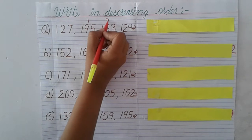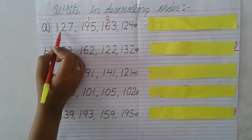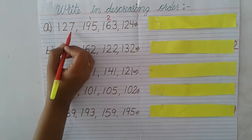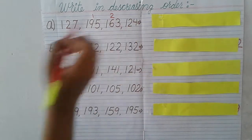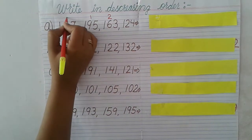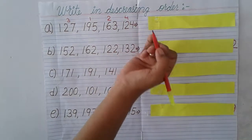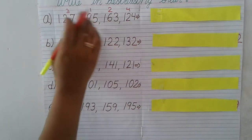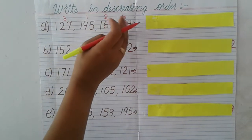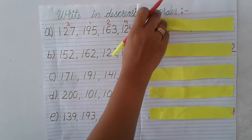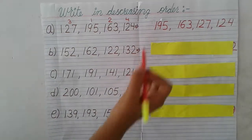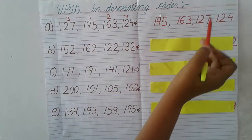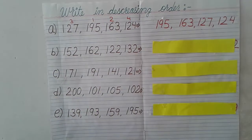Then we have 2 and 2 in the tens place, so we compare the ones place: 7 and 4. Which is the biggest? 7. So 127 is third and 124 is fourth. Before writing in the answer column, arrange them by comparing, then write the numbers. The answer is: 195, 163, 127, 124.